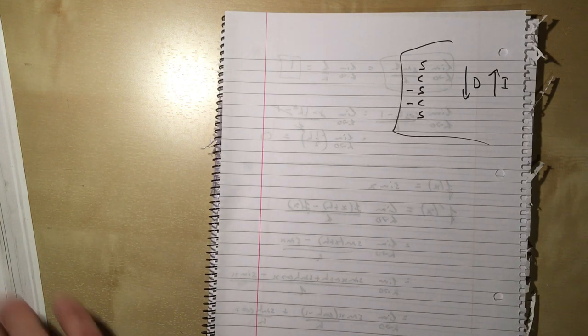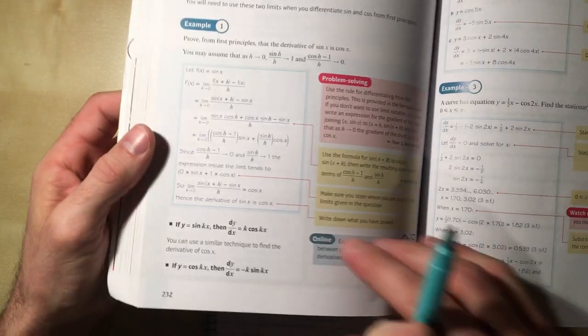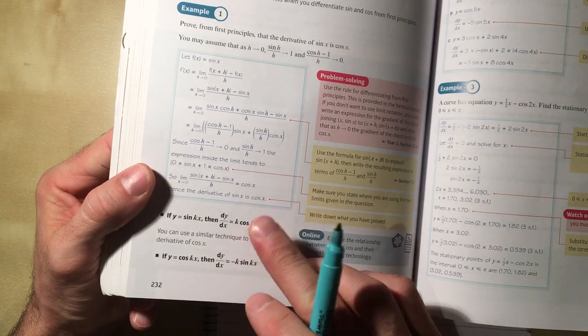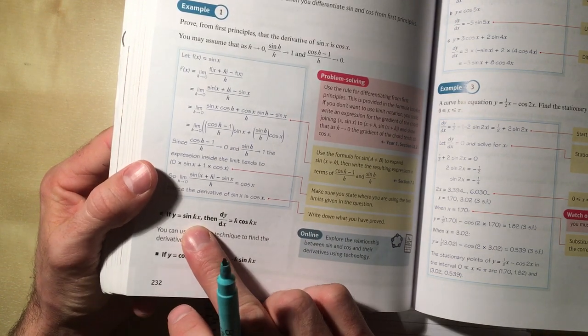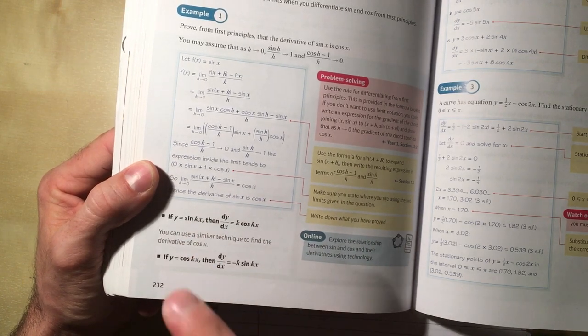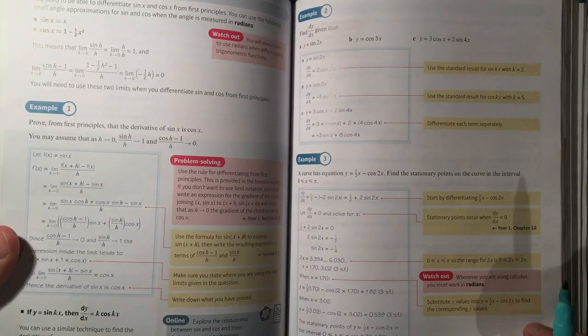OK. Now, the next thing that happens in the book is they go into examples where we're not just differentiating cos or sine, we're differentiating it with a k in there. So it's not just sine x, it's sine of k times x. Now, I'm going to leave these for the moment, because when we've got the chain rule,